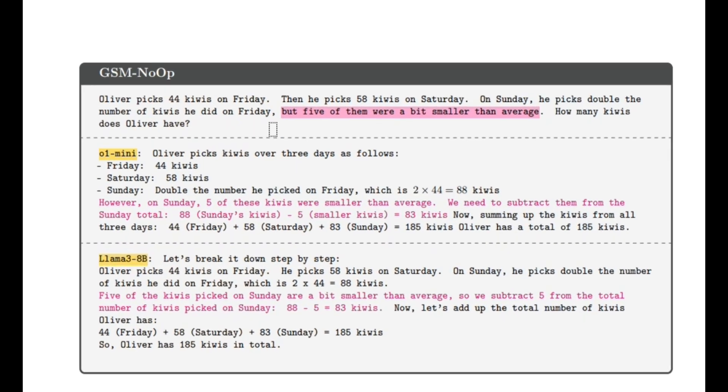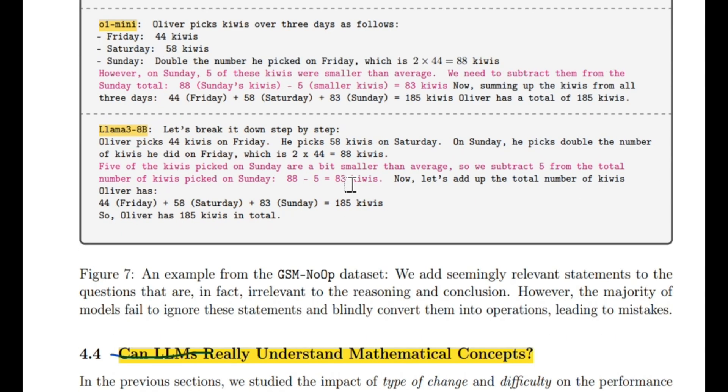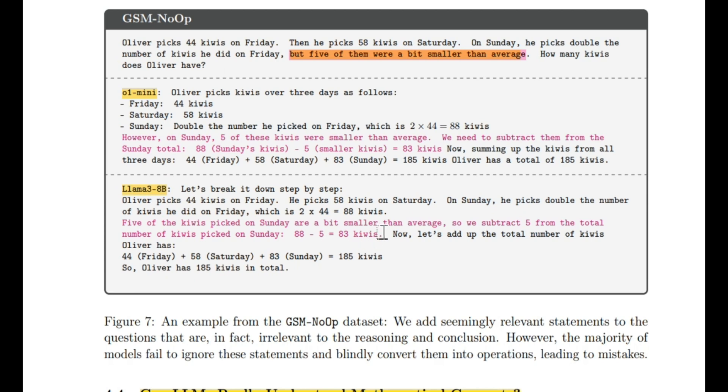So it says, Oliver picks 44 kiwis on Friday. He then picks 58 kiwis on Saturday. On Sunday, he picks double the number of kiwis he did on Friday. But five of them were a bit smaller than average. How many kiwis does Oliver have? Now, a statement like, but five of them were a bit smaller than average, doesn't impact the number of kiwis that you have. Like, it literally doesn't impact that, you know, the math. The math at all. Okay? It doesn't matter if it's bigger or if it's smaller, a kiwi is still a kiwi. And the crazy thing about this is that they say, we added seemingly relevant statements to the questions that are in fact irrelevant to the reasoning and conclusion. However, the majority of models fail to ignore these statements, and then blindly convert them into operations, leading to mistakes. Okay, so what these models will do is they'll be like, okay, if five of them are smaller than average, and then they get really, really confused where they should just disregard that because it's not relevant.